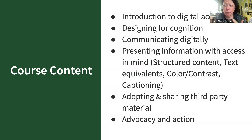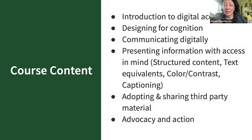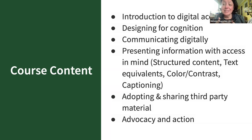We talk often about the five principles of digital accessibility — things like text equivalents, color and contrast, and structured content — those nuts and bolts will be there. But we've also added exciting new modules including a whole piece on the psychology of designing for cognition, things related to adopting others' materials and working with existing content out on the web and in digital spaces, and a piece about advocacy and action.